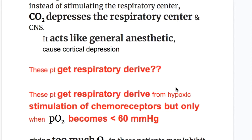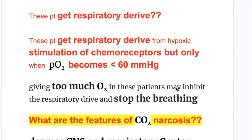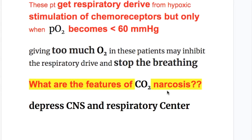How do these patients get respiratory drive? These patients get respiratory drive from hypoxic stimulation of the chemoreceptor, but only when oxygen level becomes less than 60 millimeters of mercury. So giving too much oxygen to these patients may inhibit their respiratory drive and stop the breathing.